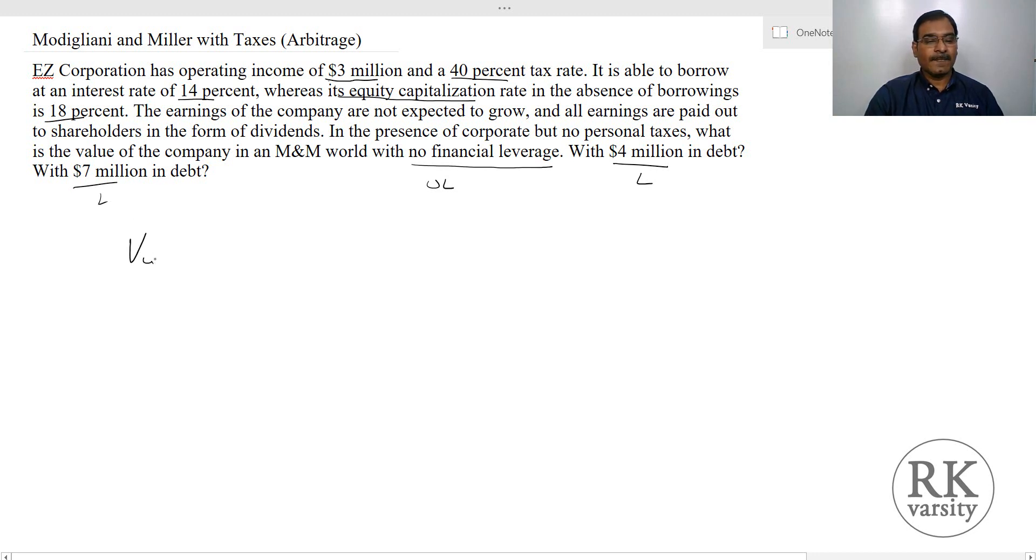Value of unlevered firm equals market value of equity because there is no debt. In case of value of levered firm, this equals market value of equity plus present value of tax shield. Present value of tax shield equals debt times tax rate. In our case the tax rate is 40%.